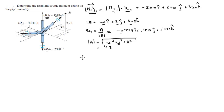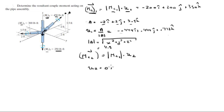Now look at MC2. MC2 is very easy — it's given by the magnitude of 250 times a unit vector. This unit vector points straight down, so it equals 0 i + 0 j minus 1 k. Multiplying by 250 gives MC2 = 0 i + 0 j minus 250 k.